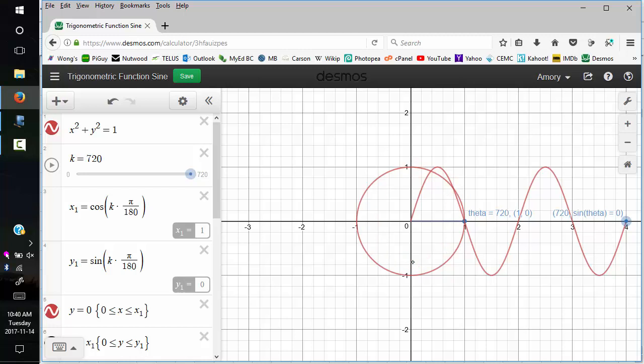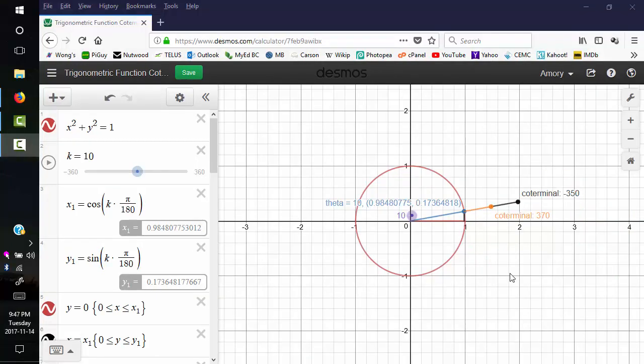The idea is we keep going around and around the circle. We have an infinite number of coterminal sides. We can keep going to infinity, and this trig function just keeps going to infinity. It also goes backwards to negative infinity. We're thinking sine as a function rather than just as a triangle problem.